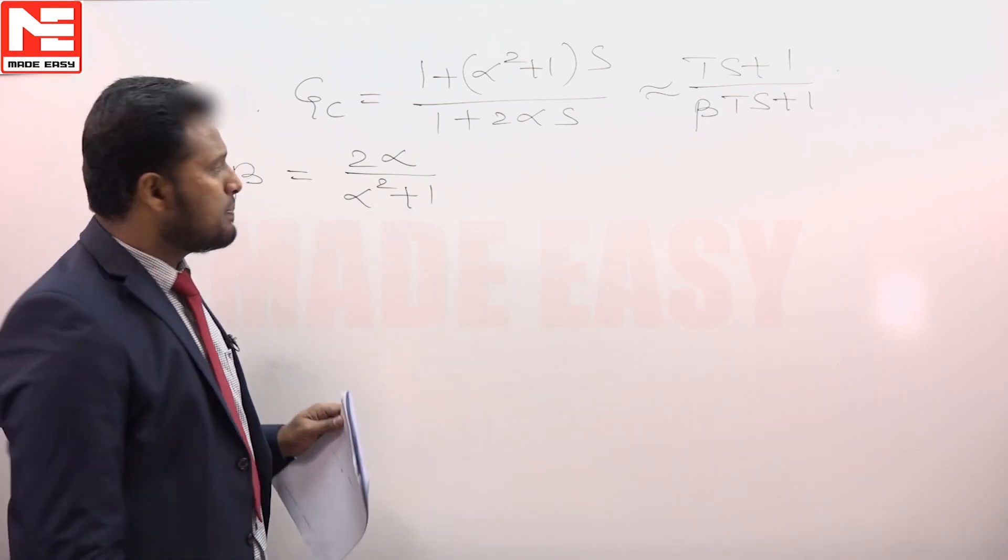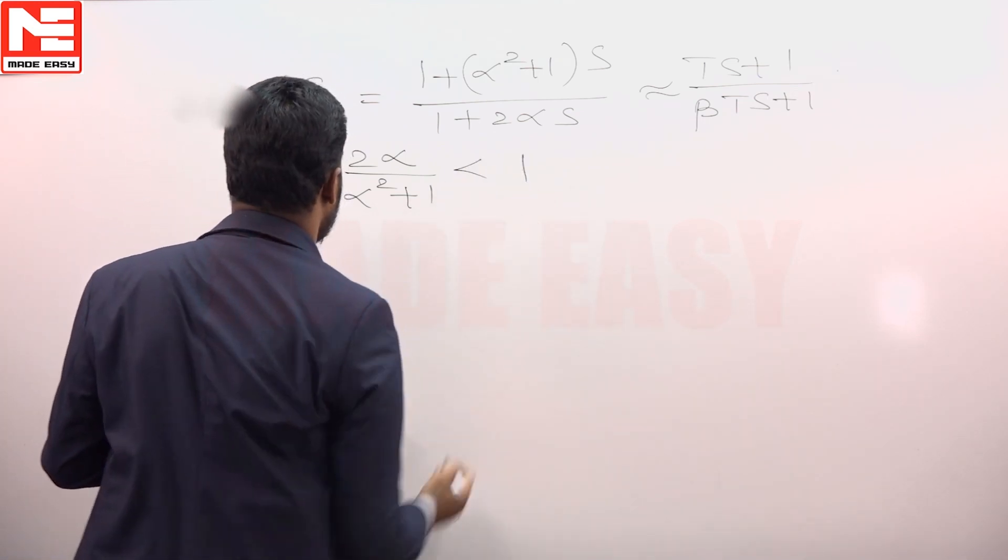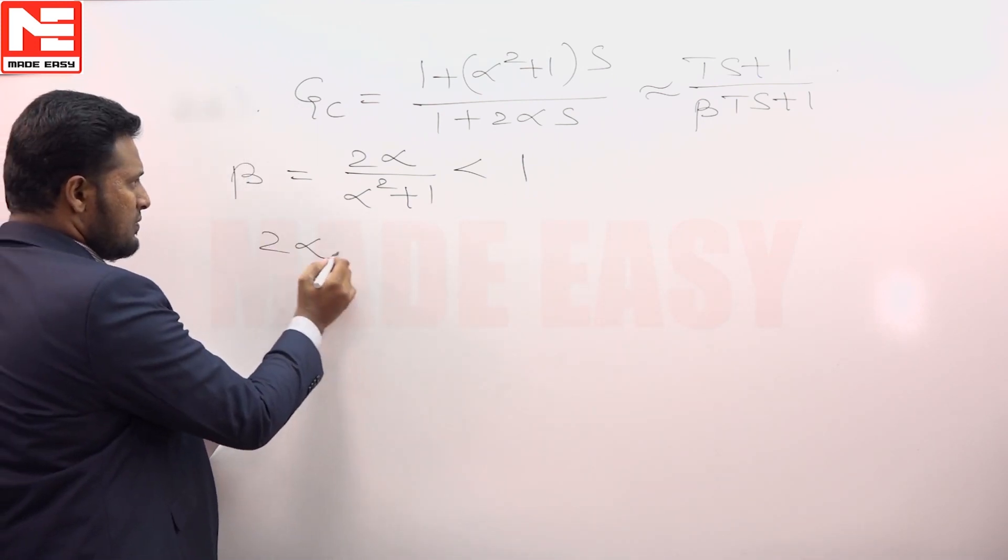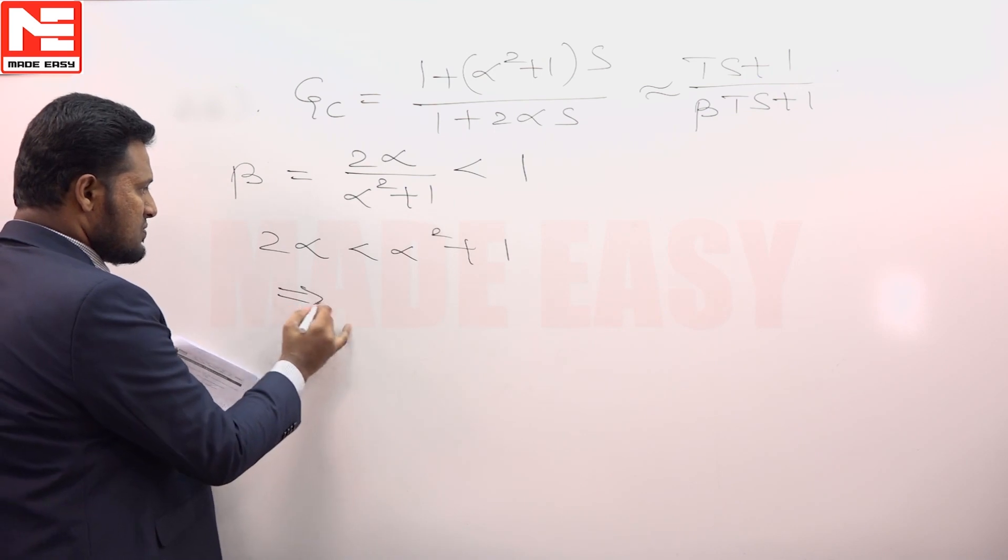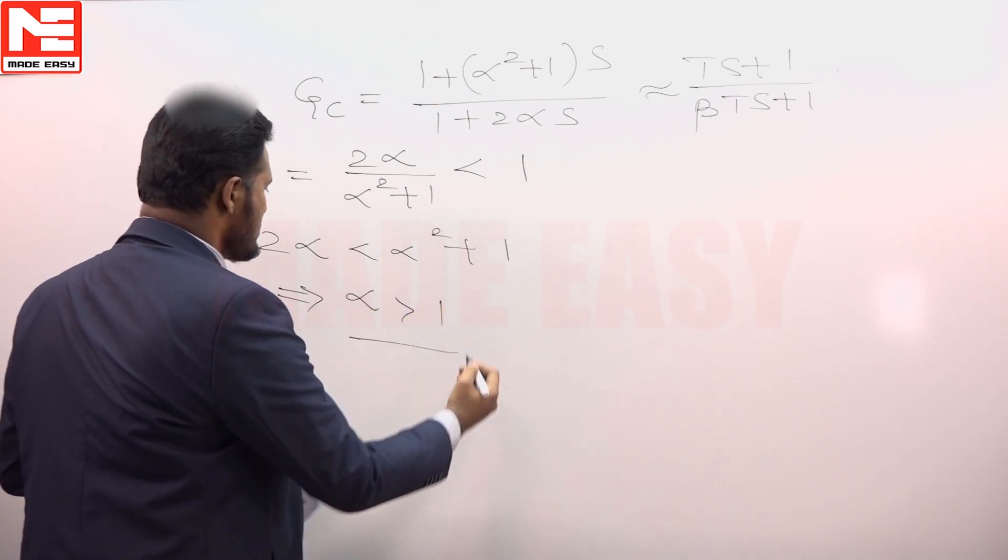For a system to be a lead compensator, it should be less than 1. So 2 alpha has to be less than alpha squared plus 1. From this we can obtain that alpha has to be greater than 1.